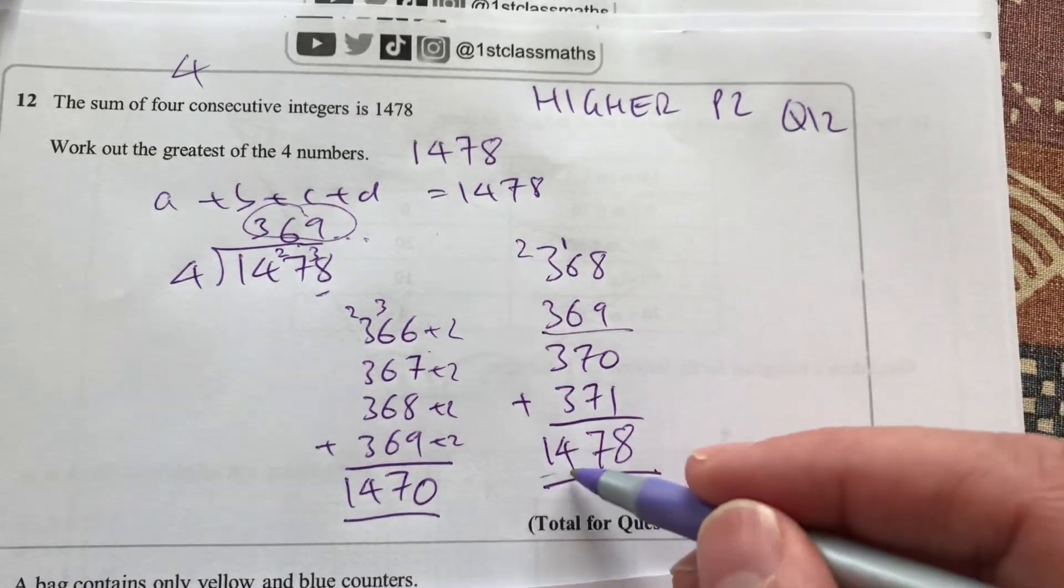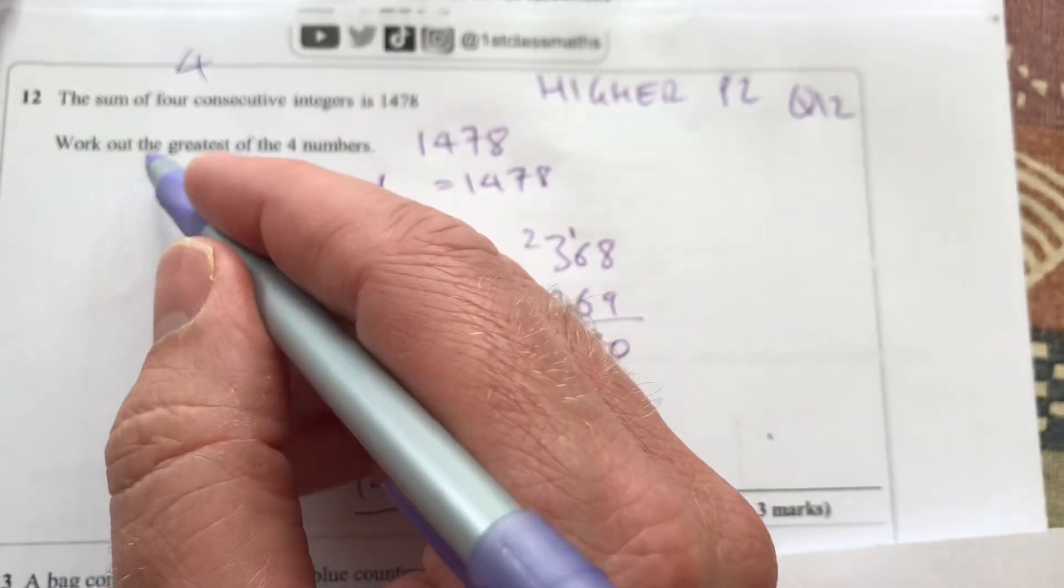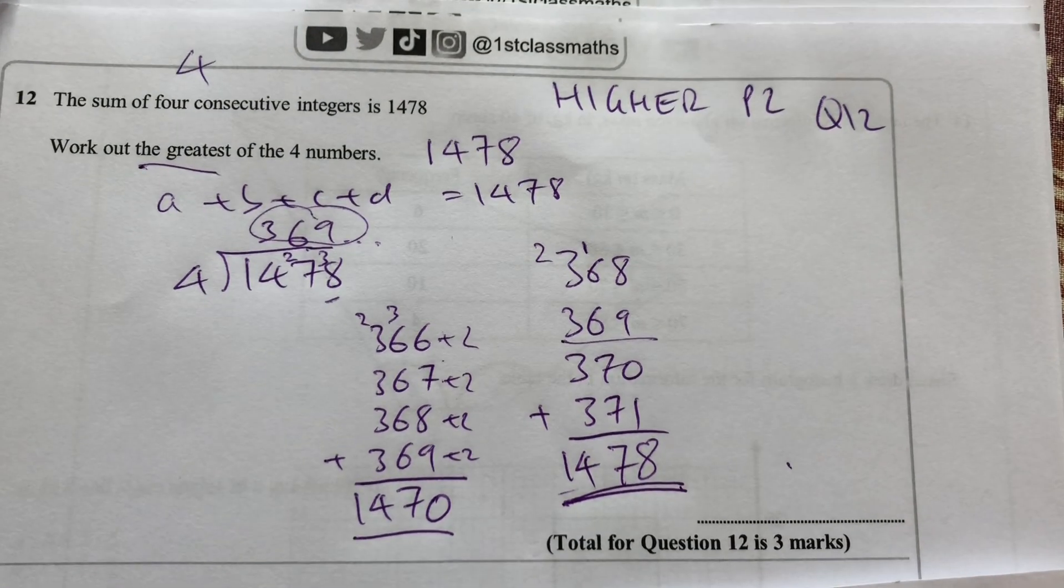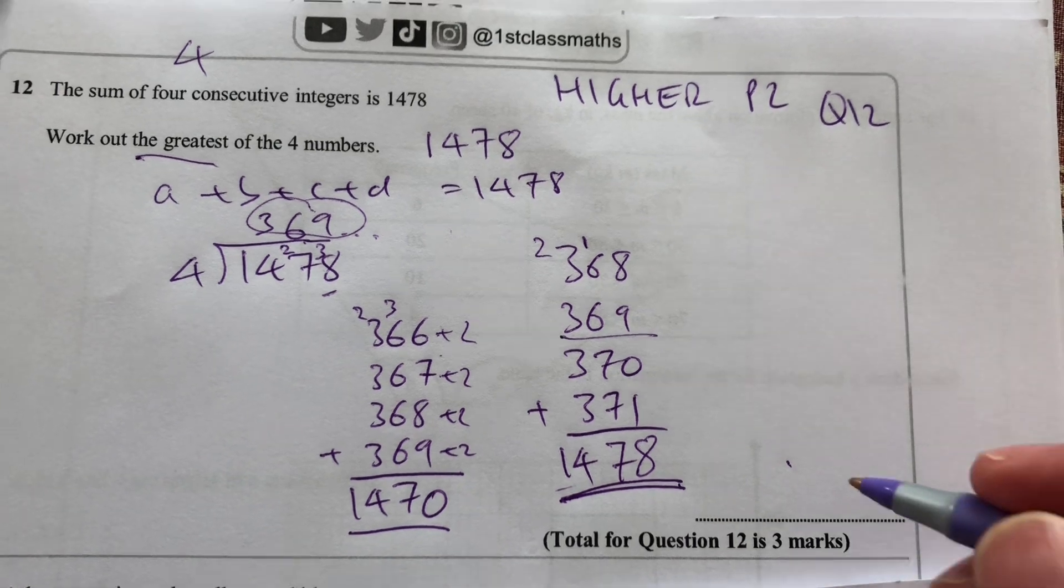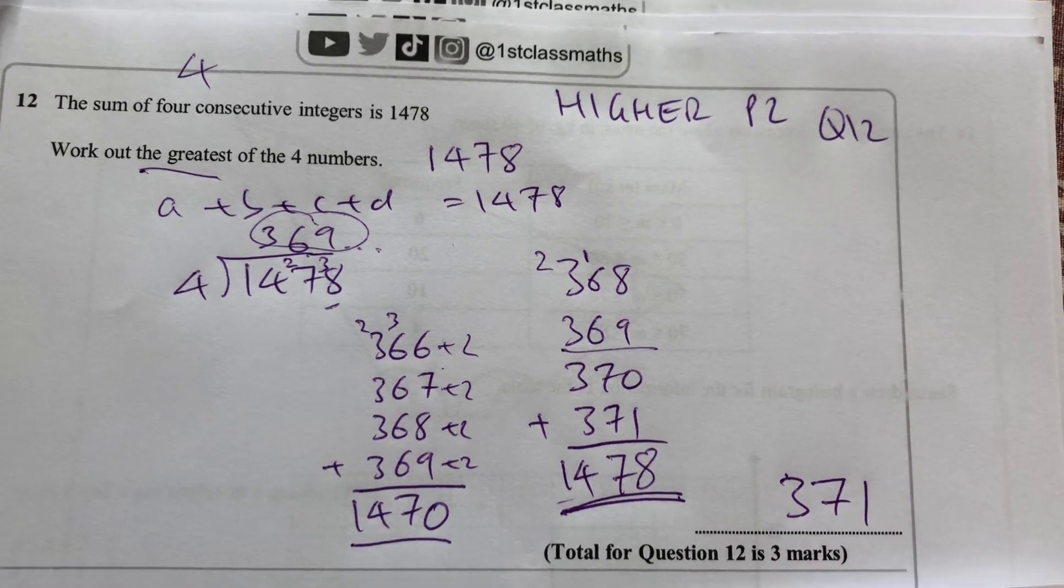So to actually answer the question, I've correctly found them, but it says to work out the greatest of the four numbers. I must remember to answer the question. The largest of that is 371.